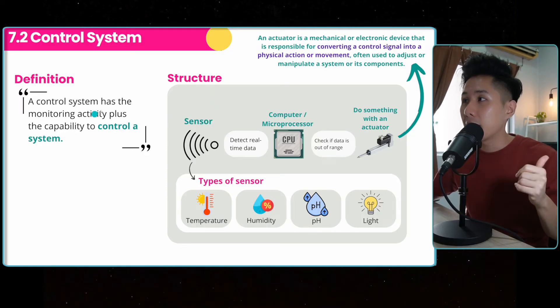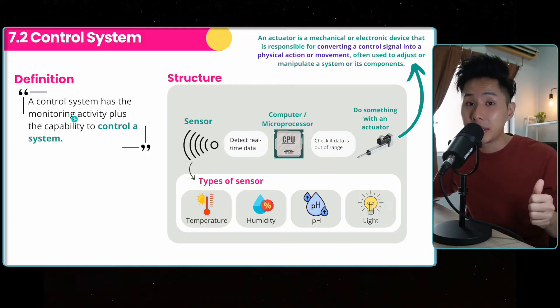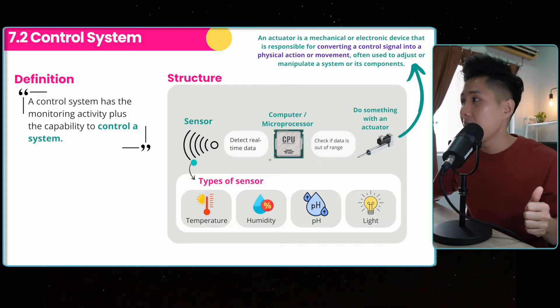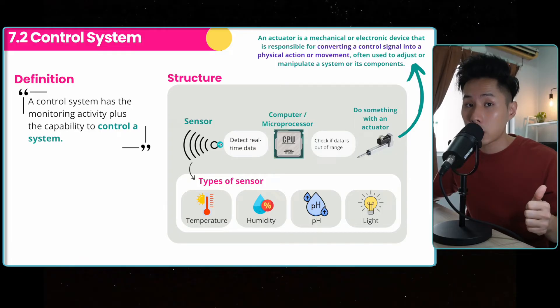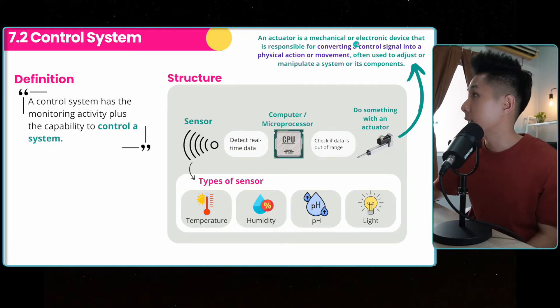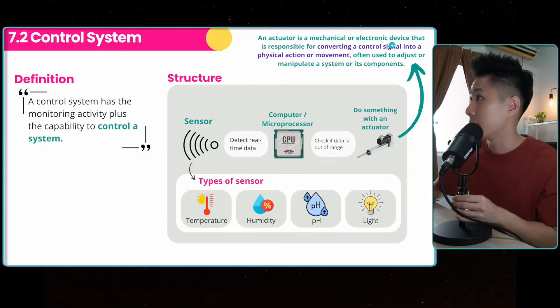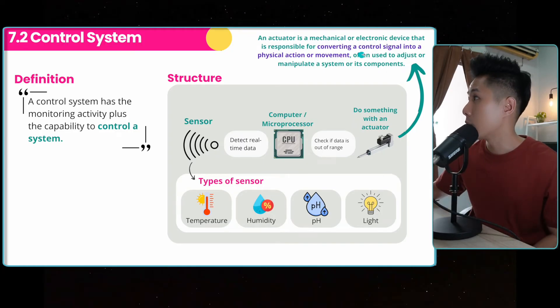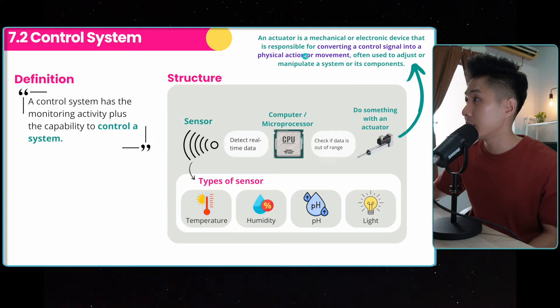They are basically everything about monitoring system, but then they have the capability to control a system. And the only difference in terms of structure is that they have an actuator. So this actuator is a mechanical or electronic device that is responsible for converting a control signal into a physical action or movement, often used to adjust or manipulate the system or its component.